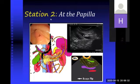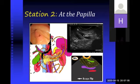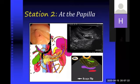For station two, withdraw the echoendoscope slightly upward to face the papilla, then suck all air to kiss the papilla. Our landmark is the stack sign - the meeting of the common bile duct and the pancreatic duct. The common bile duct is the channel nearer to the echoendoscope, while the pancreatic duct is the channel away from it. Normal upper limit for the common bile duct is 7mm, or 9mm post-cholecystectomy. Normal pancreatic duct is up to 3mm at the head, 2mm at the body, and 1mm at the tail.